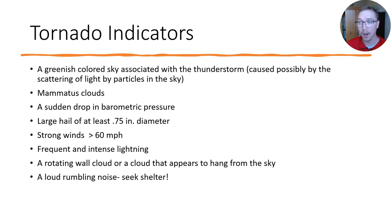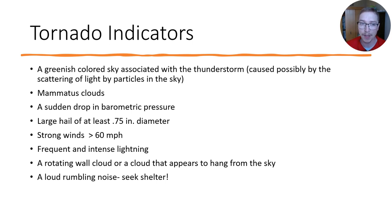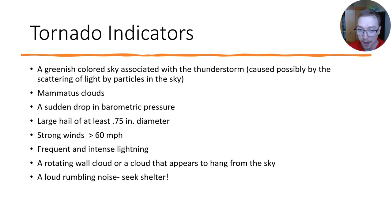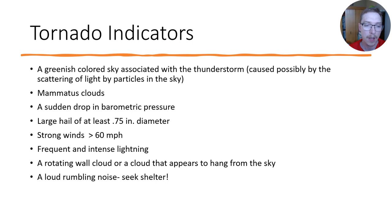What are some indicators that conditions are right for a tornado? First, a greenish colored sky associated with the thunderstorm, possibly caused by scattering of light by particles in the sky. Mammatus clouds — those really chunky looking clouds where the cloud base appears to sag down. A sudden drop in barometric pressure, large hail of at least three-quarters of an inch diameter, strong winds exceeding 60 miles per hour, frequent and intense lightning, a rotating wall cloud, and a loud rumbling noise. If you hear that, get inside and find safety.